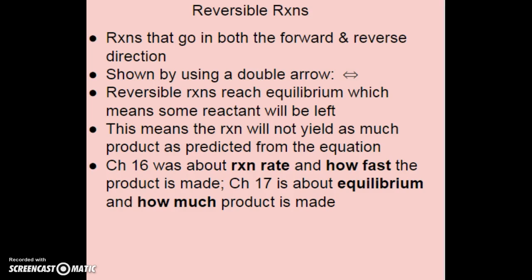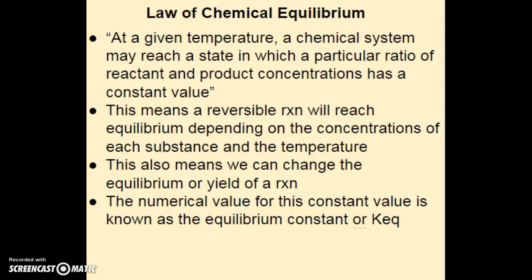Reversible reactions go both in the forward and reverse directions, shown with a double arrow, whereas complete reactions use a single arrow. They reach equilibrium, which means some reactant will be left. This is important because it means the reaction will not yield as much product as stoichiometry predicts. Chapter 11 covered how much product you could make, chapter 16 covered how fast you make it, and now chapter 17 focuses on how much product you'll actually make — the equilibrium.